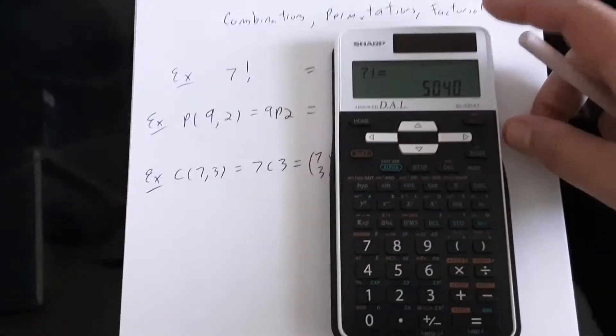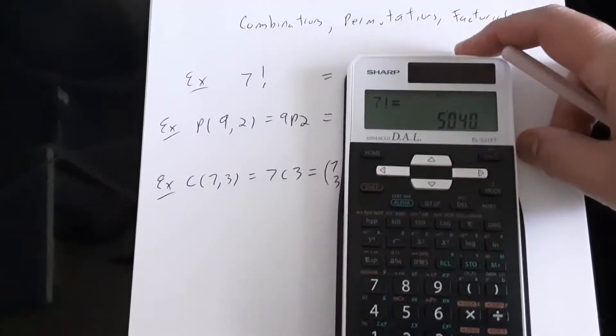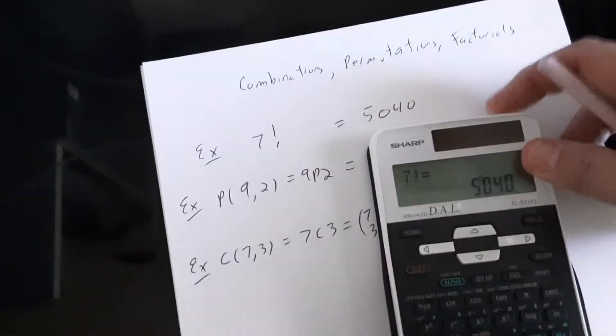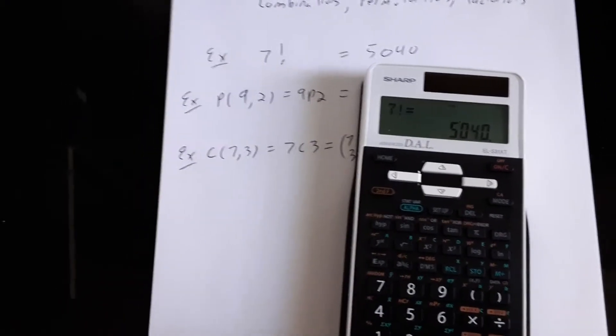When I hit equals it tells me 5040. So the number of ways to arrange seven distinct objects, 5040.